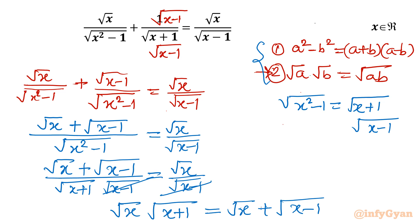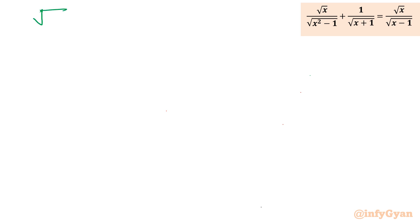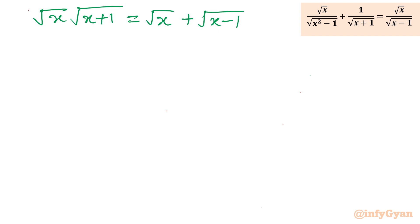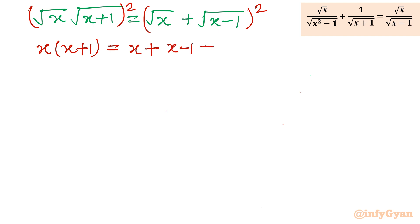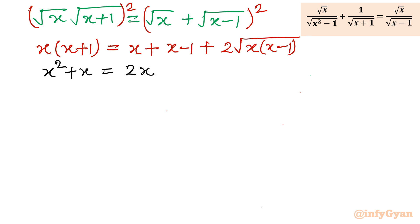The equation now looks simpler. Squaring both sides: the left side gives x(x+1), and the right side expands as x + (x-1) + 2·square root[x(x-1)], which gives x squared plus x on the left, equal to 2x minus 1 plus 2·square root(x²-x) on the right.